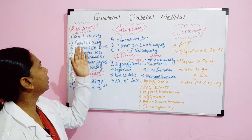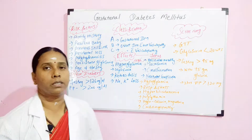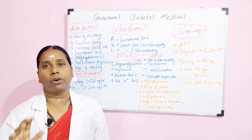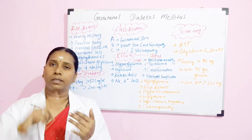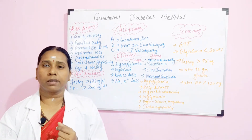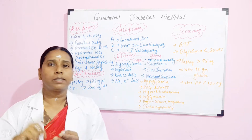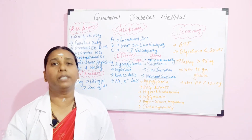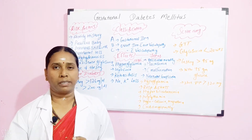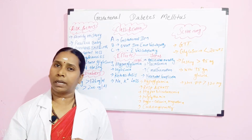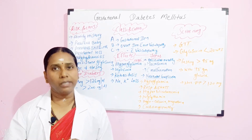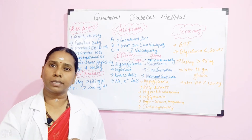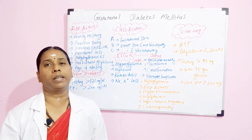The first risk factor is family history of diabetes — that is like parents, uncles, aunts, siblings, anybody who is present with diabetes. The woman or the mother who is pregnant is also having a proportionate risk of having gestational diabetes.